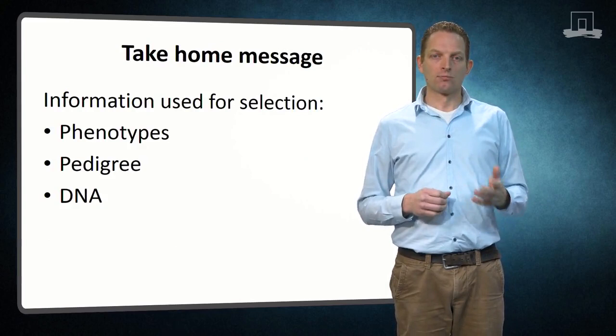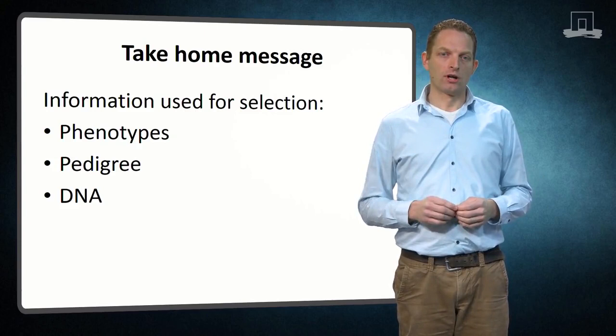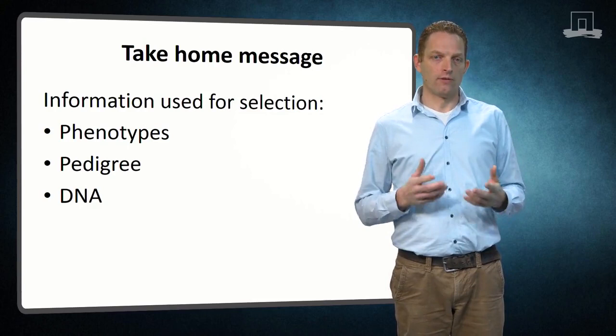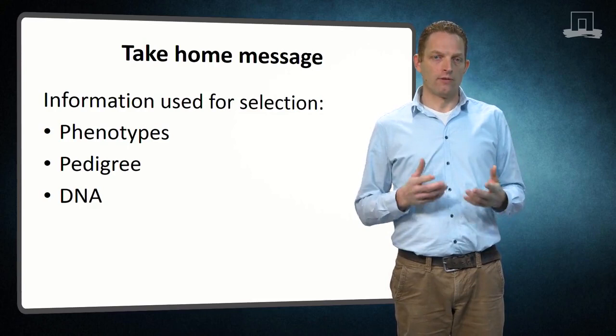This brings us to the end of this lecture. Let's briefly summarize the main messages. Information used for selection comprises phenotypes, pedigree, and DNA. Phenotypes are needed to define differences in performance between individuals, while pedigree or DNA are needed to define relationships between individuals.